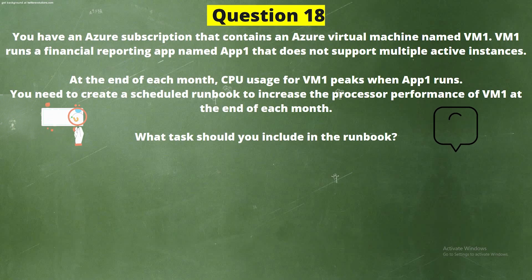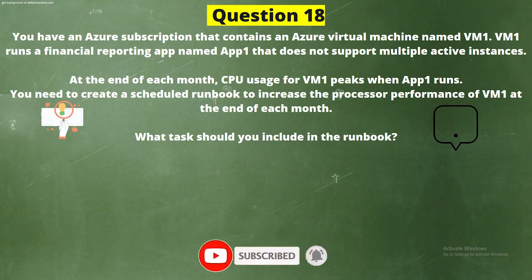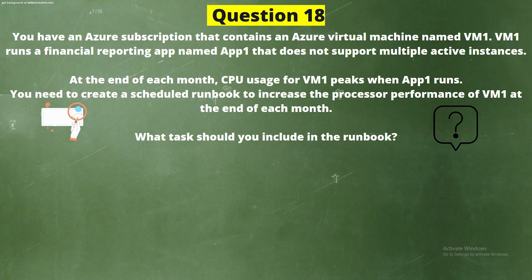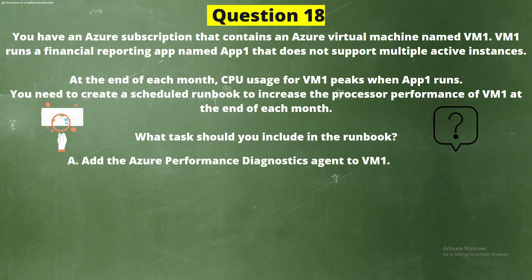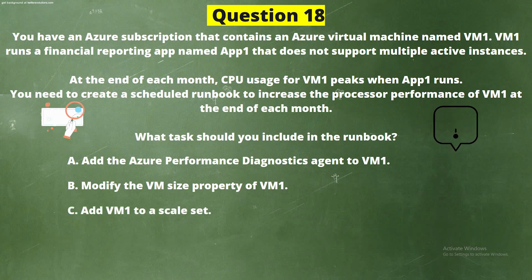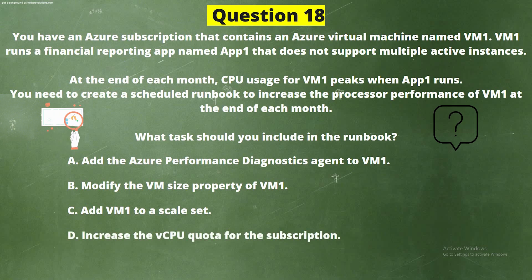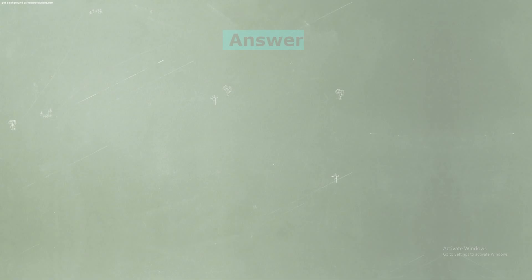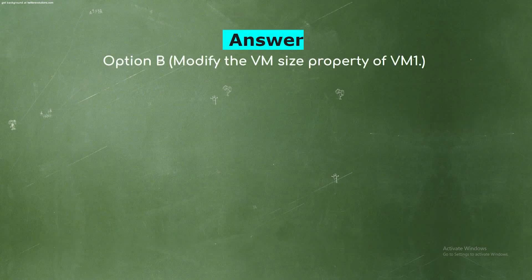Question 18. You have an Azure subscription that contains an Azure virtual machine named VM1. VM1 runs a financial reporting app named App1 that doesn't support multiple active instances. At the end of each month, CPU usage for VM1 peaks when App1 runs. You need to create a scheduled runbook to increase the processor performance of VM1 at the end of each month. What task should you include in the runbook? Options: A) add the Azure performance diagnostic agent to VM1, B) modify the VM size property of VM1, C) add VM1 to a scale set, D) increase the vCPU quota for the subscription, E) add a Desired State Configuration (DSC) extension to VM1.